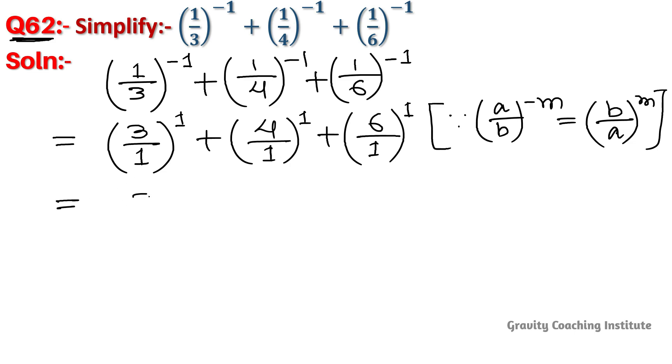We divide 3 by 1 to get 3, and 3 to the power 1 is 3. Similarly, 4 divided by 1 is 4, and 6 divided by 1 is 6. This equals 13.